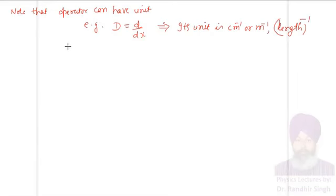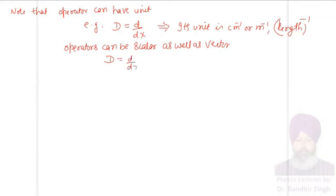So, please remember this can have unit. Secondly, operators can be scalar as well as vector. So, capital D which is equal to d by dx is a differential operator but it is a scalar operator.